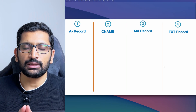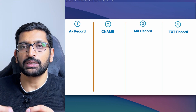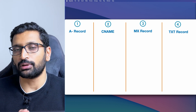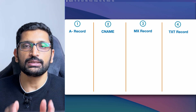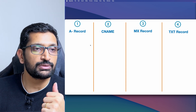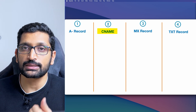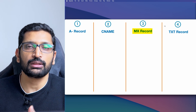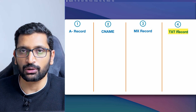Now we've seen how the IP address of a website is resolved when you enter a URL in the browser. Let's talk about DNS records, which are of four types: the first is the A record, the second is the CNAME, the third is the MX record, and the fourth is the TXT or text record.